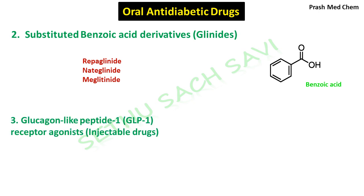The third class of drugs in insulin secretagogues are GLP-1 receptor agonists — glucagon-like peptide-1 receptor agonists — and the drugs include exenatide and liraglutide. Although included in this oral classification, keep in mind that these drugs belong to the peptide category and therefore must be given as injectable drugs — specifically subcutaneously.